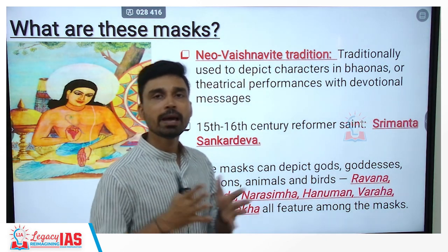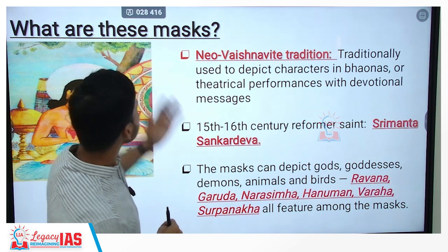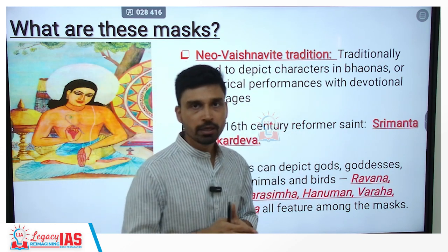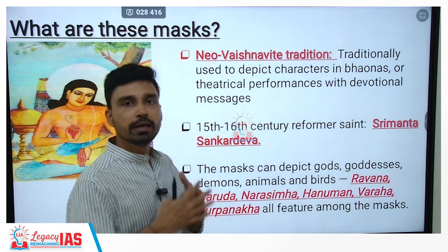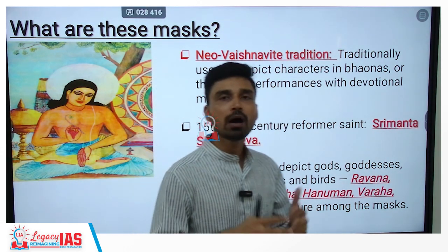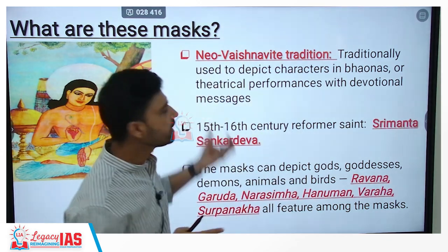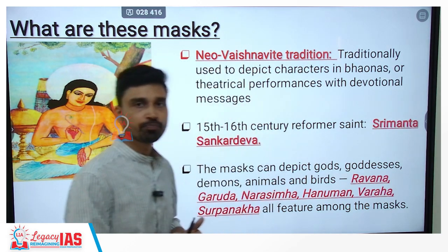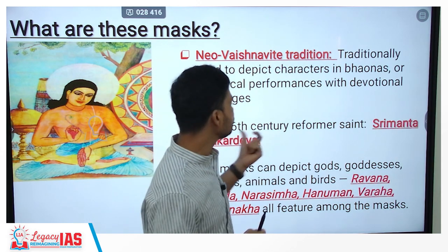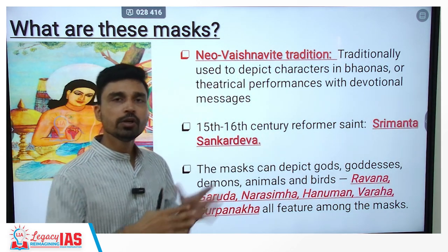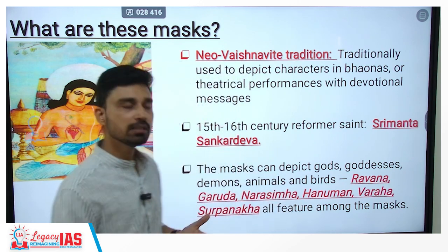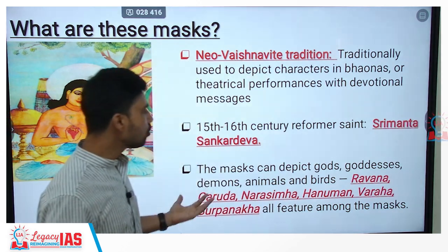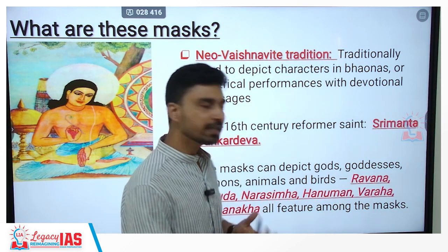Now let us focus on the Majuli masks that recently received the GI tag. The masks originate from Majuli, which is the seat of the neo-Vaishnavite tradition of Assam. Traditionally, masks were used in the 16th century to depict characters in Bhavnas. Bhavnas are theatrical performances with a devotional message. The 15th–16th century Bhakti reformer Srimant Sankar Deva introduced the idea of Bhavnas as well as the use of masks within them. In these performances, masks can depict gods, goddesses, demigods, demons, animals, and birds.